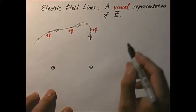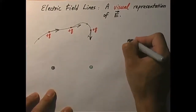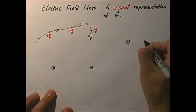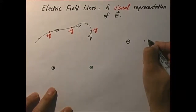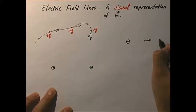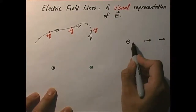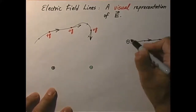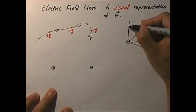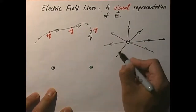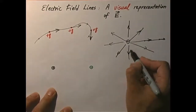For example, if I have a positive charge, how does one draw representative electric field lines? Suppose I put a positive test charge here — what force would it experience? Well, it experiences a force like that. You put it there, it's like that. It always points radially away. So a field line would be a straight line, and you can draw other straight lines radiating away from the source, which is a positive charge.